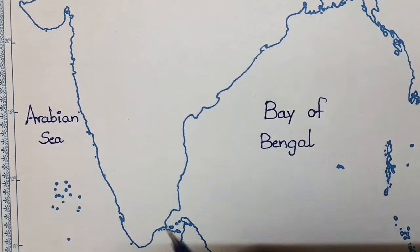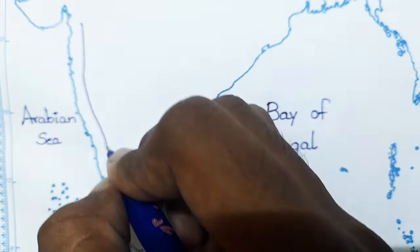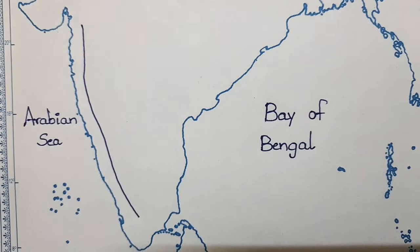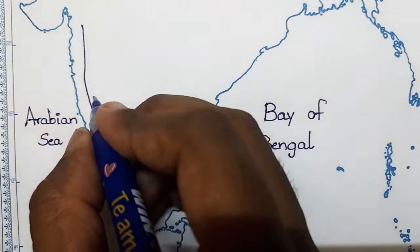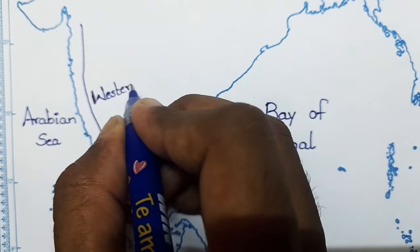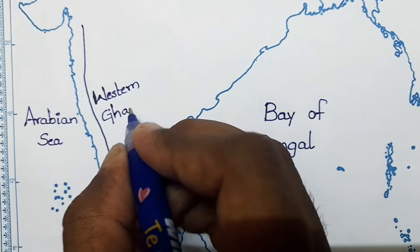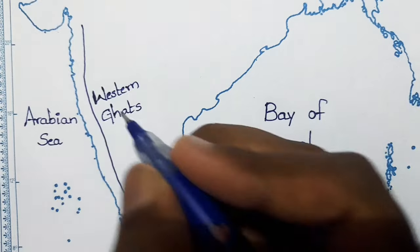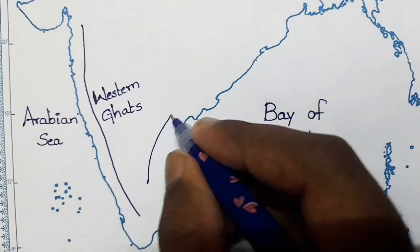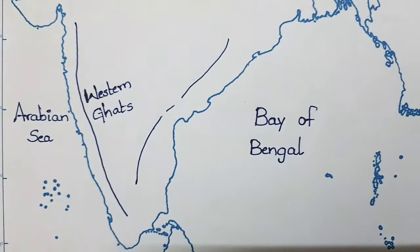Next, coming to the southern side, here we can point both the Western Ghats and Eastern Ghats, which are more important for children to learn and point in the map for studies. I have drawn a long line which we point as Western Ghats, from the starting point to the ending point. On the right side, this line indicates the Eastern Ghats.